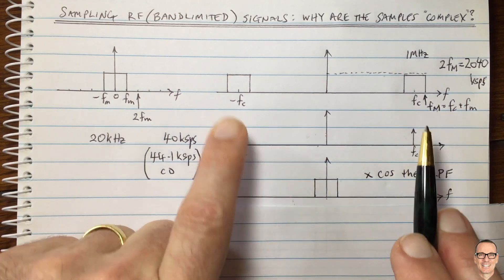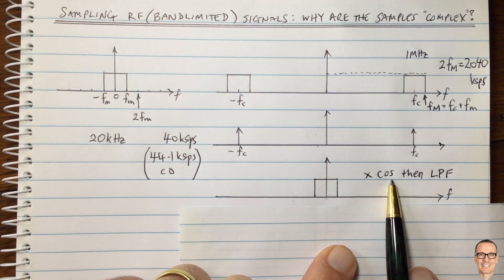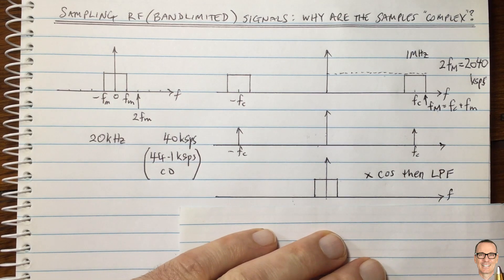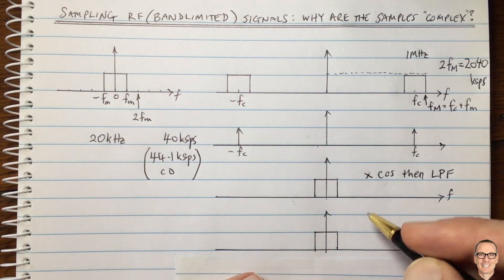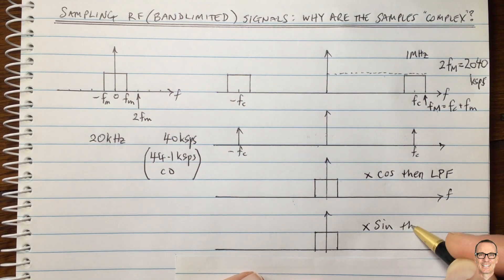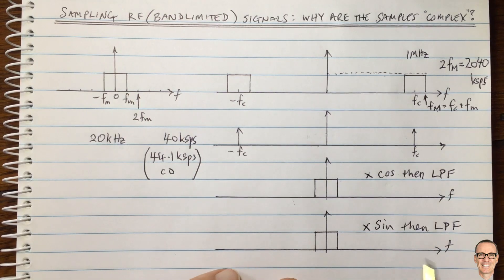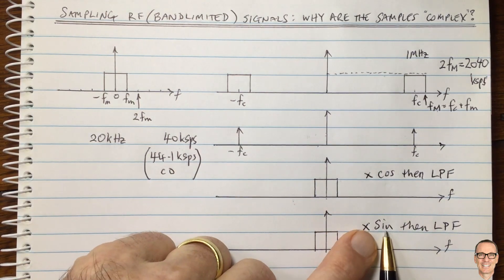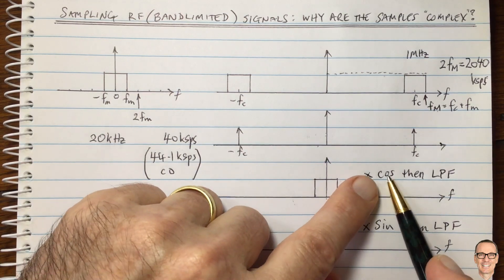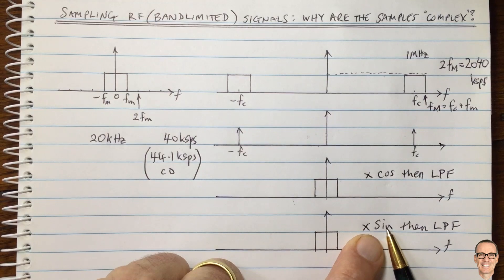So if we don't do this with the sine as well as the cos, then we're only getting information from our original signal which is in the cos dimension. But we've got the orthogonal dimension of sine, which is 90 degrees out of phase. And so we've got to also multiply by a sinusoidal wave, then low-pass filter. And so it's the orthogonality of the cos wave and the sine wave that means we have to do it for both.